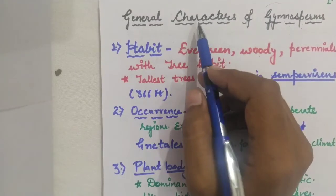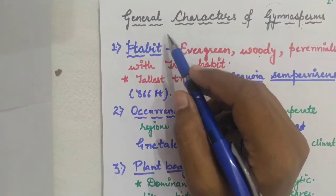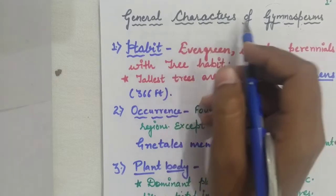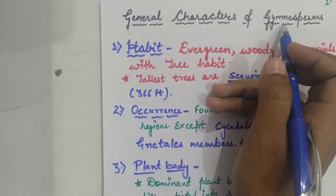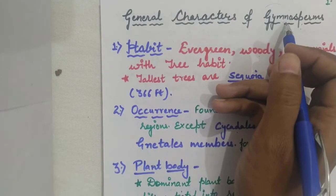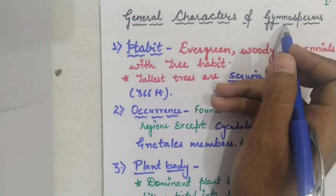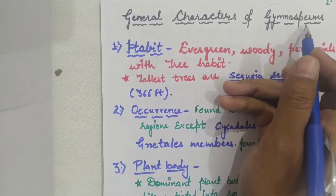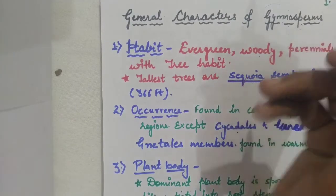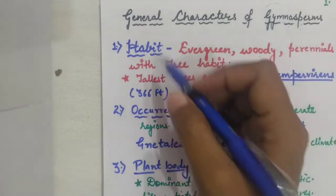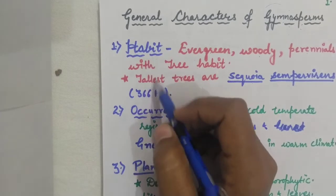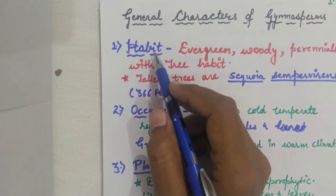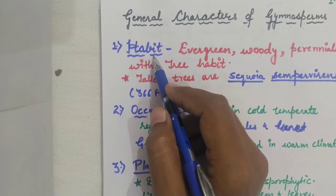Hello students, today we are going to study about general characters of gymnosperms. Gymnosperms are the plants that come after pteridophytes in the plant kingdom. There are some general characters; first we will study about habit, then occurrence, then the morphological characters.